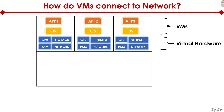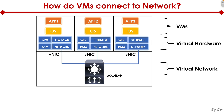Now that we understand how a server is virtualized, the next question is: how do we connect the virtual machines to the physical network? At the top we have the virtual machines, then right underneath that we have the virtual hardware. The network component of each virtual machine may have a single vNIC — a virtual network interface card — or it may have multiple vNICs. All these vNICs from different VMs terminate into a vSwitch, or virtual switch. This is a virtual network — it's all logical constructs, not physical.